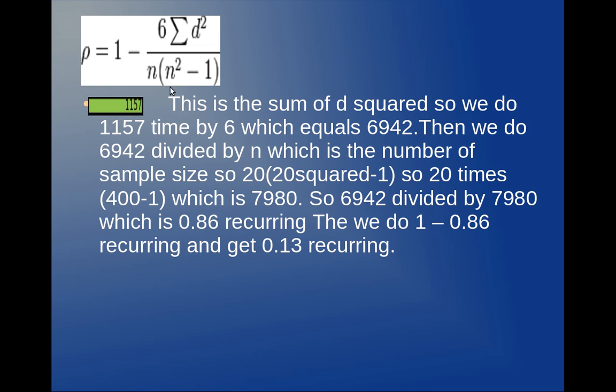Then I have to divide it by n bracket n squared take away 1. So n represents the sample size, and that's 20. So it's 20 bracket 20 squared take away 1, which equals 7,980.